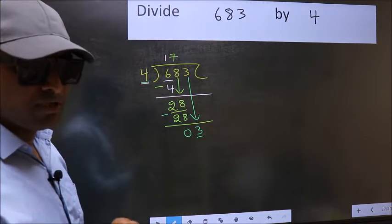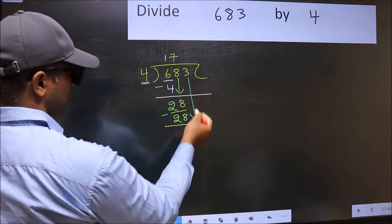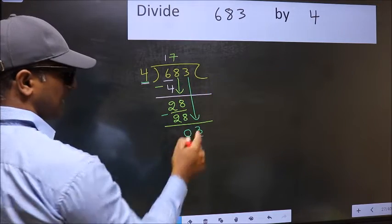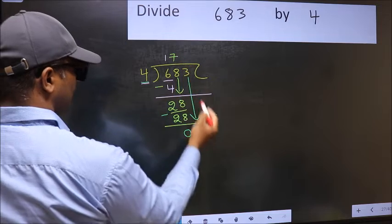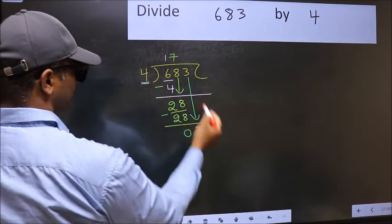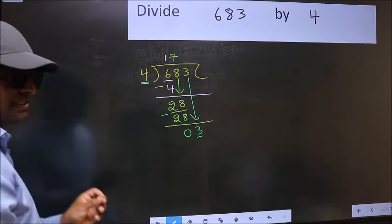Why is it wrong? Because just now you brought this number down, and in the same step, you want to put a dot and take 0. Which is wrong.